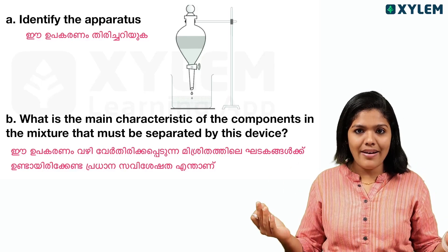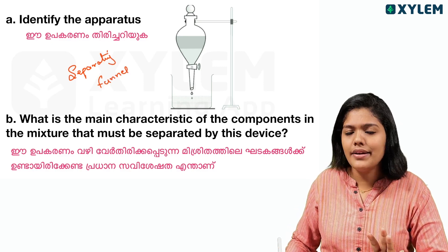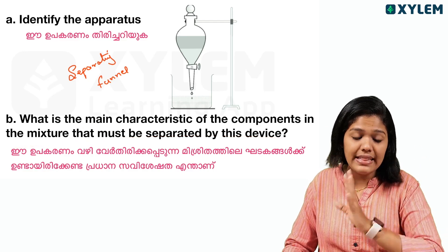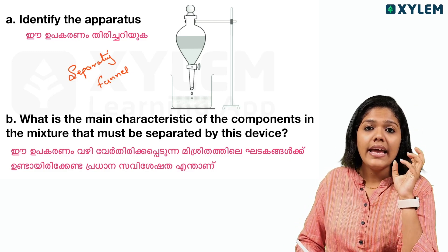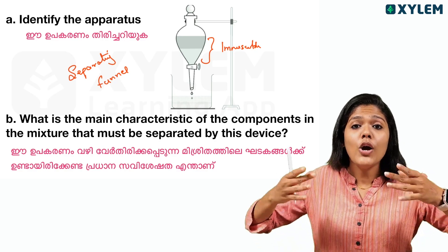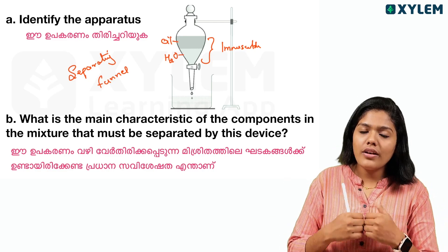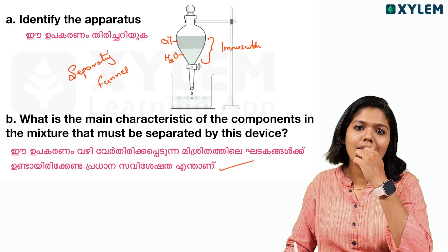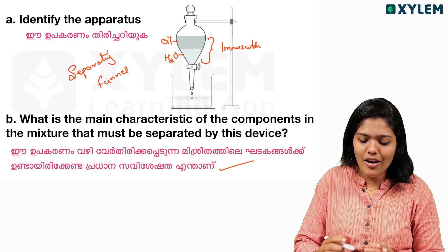Identify the apparatus — separating funnel. What is the main characteristic of the components in the mixture that must be separated by this device? These two liquids are immiscible — for example, water and oil, or water and petrol. The key property is density.